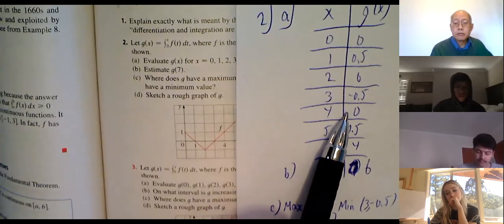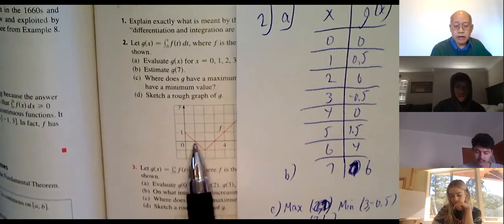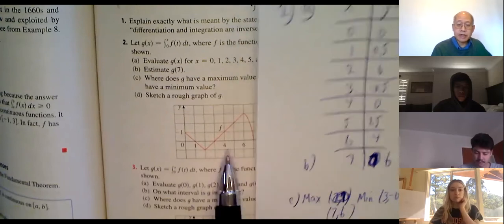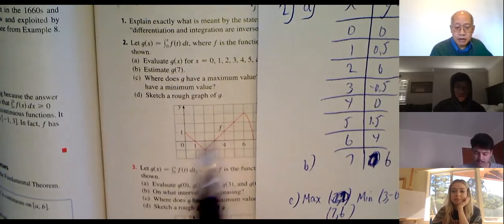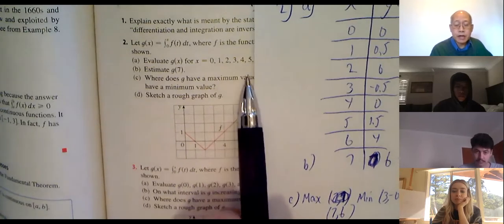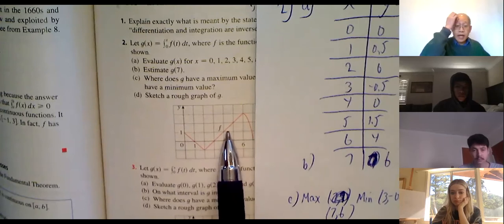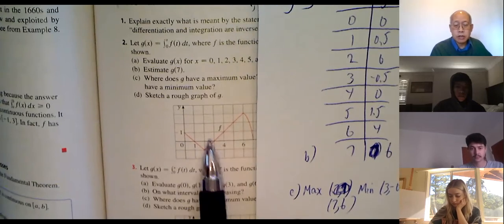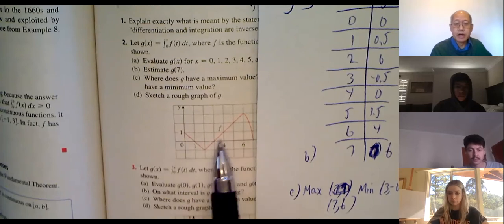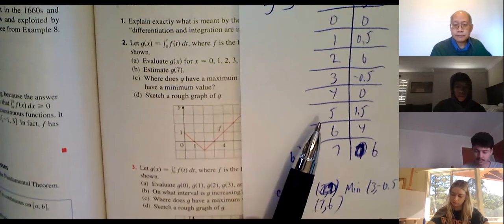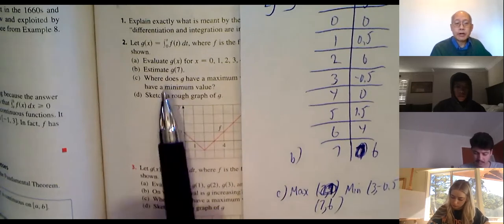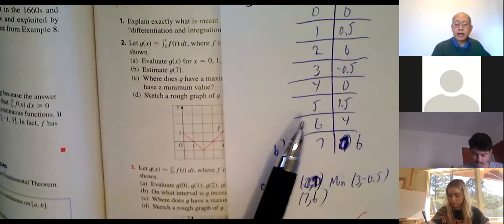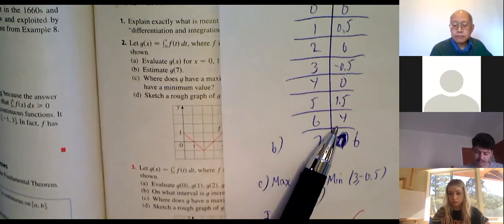We're taking the region bounded by the graph and the x-axis — anything below the x-axis counts as negative, everything above as positive. From zero to four the net total is zero, so I don't have to reinvent the wheel. Going to five I pick up another one and a half, so g of 5 is 1.5. For g of 6, I get another two and a half, adding another 1.5 to what I had at five, giving me four. So g of 6 equals 4.